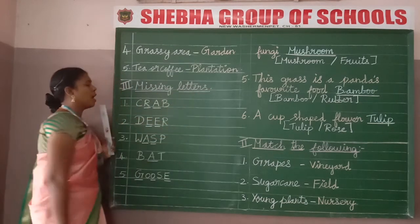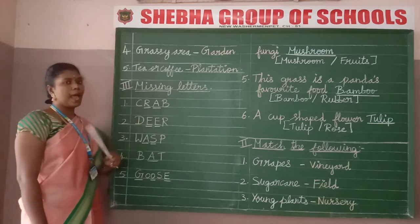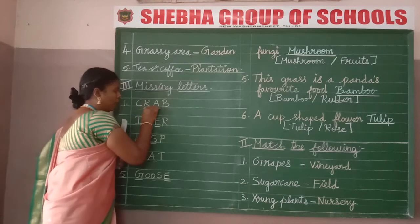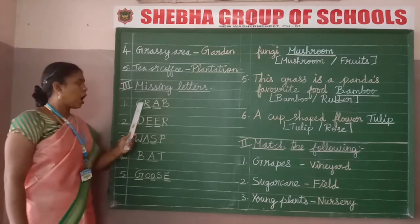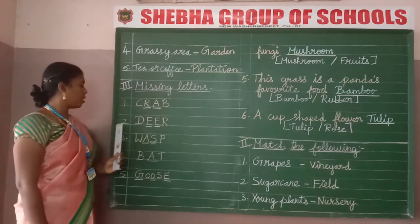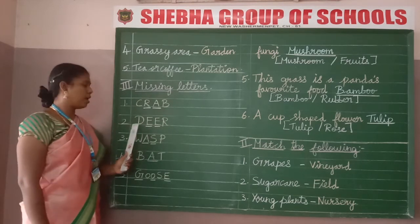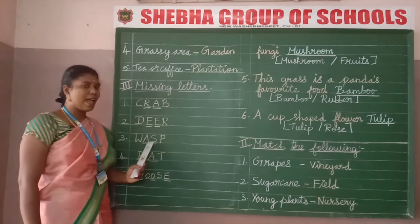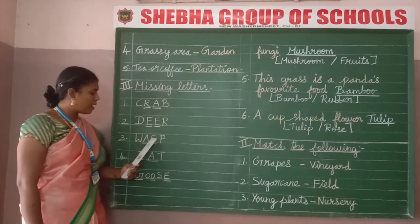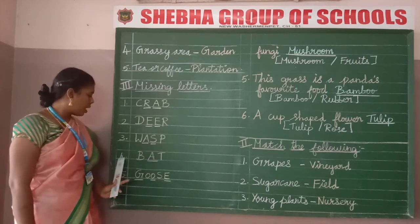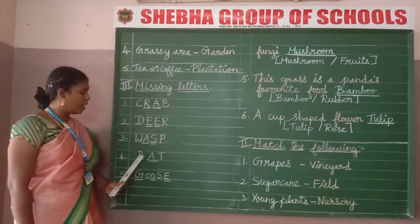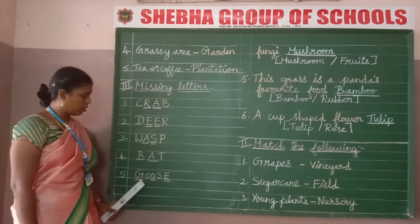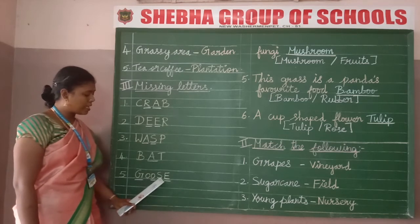Let's move to Section 3 — missing letters. Number 1: crab — crab means nand — spelling C-R-A-B. Number 2: deer — deer means monde — spelling D-E-E-R. Number 3: wasp — wasp means kulavi — spelling W-A-S-P. Number 4: bat — bat means vavad — spelling B-A-T. Number 5: goose — goose means vat — spelling G-O-O-S-E.